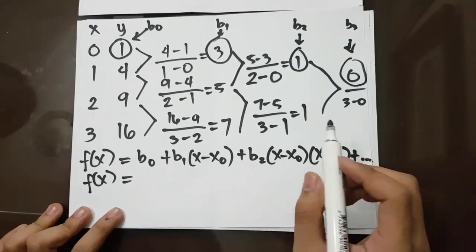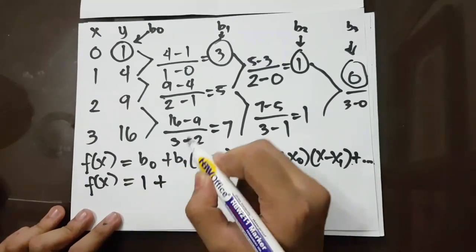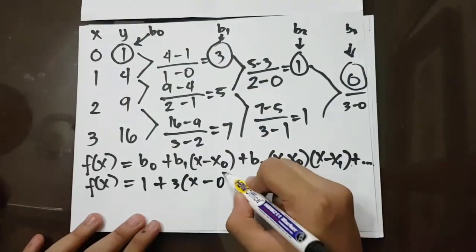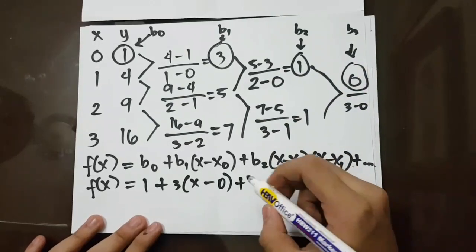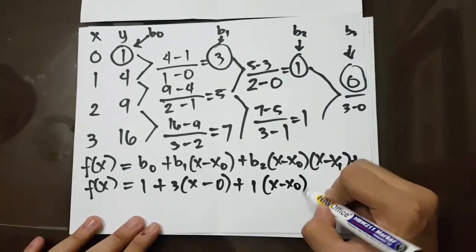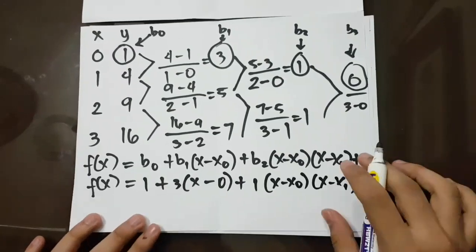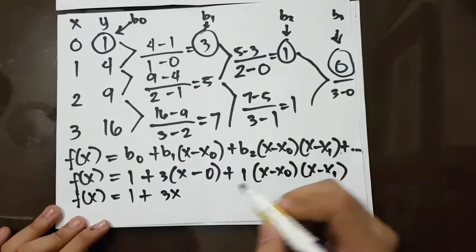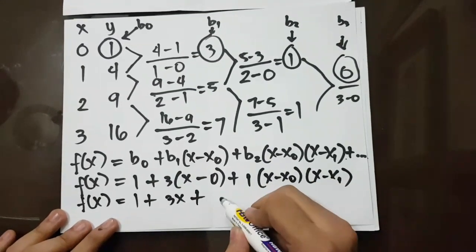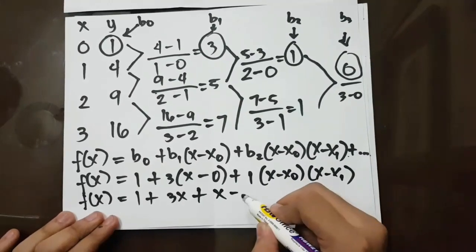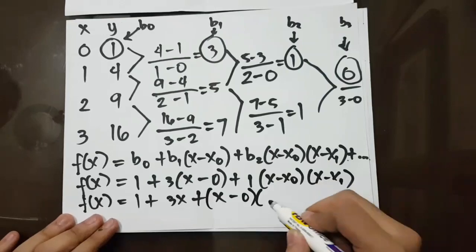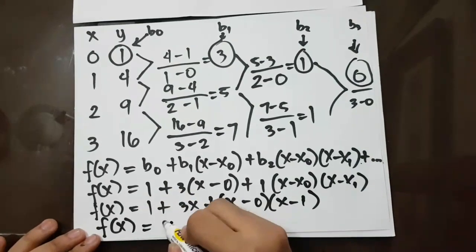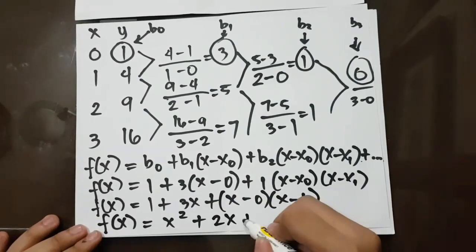Substituting the values: f(x) = 1 + 3·(x − 0) + 1·(x − 0)·(x − 1). Expanding this yields the final answer: f(x) = x² + 2x + 1.